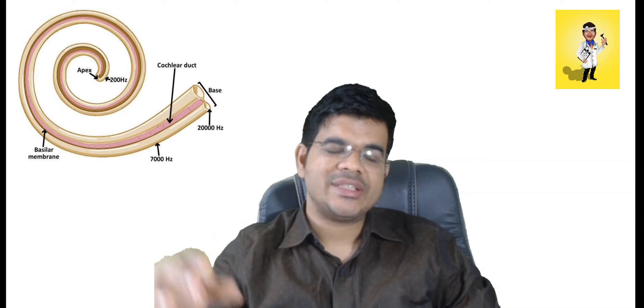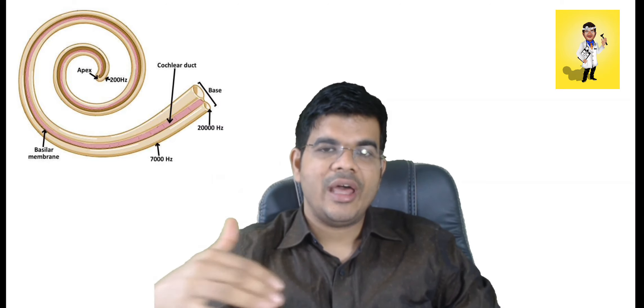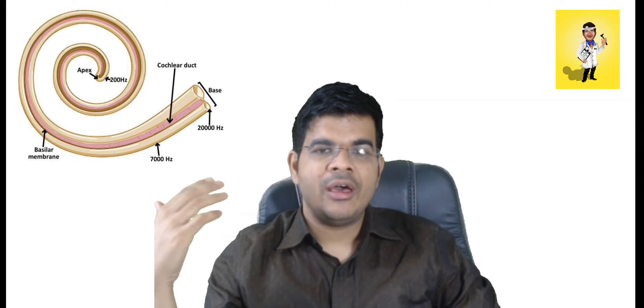Whereas the high frequency is getting affected only when the basilar part of the scala media is getting affected. What are the etiology of Meniere's disease?